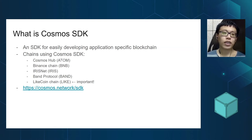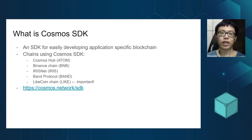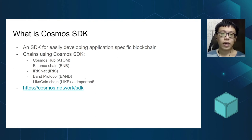Here are some chains that are using Cosmos SDK: the Cosmos Hub, whose token is ATOM, also the Binance Chain which should be quite famous, and also Iris Network and Band Protocol. These are some famous blockchains based on Cosmos SDK. They have similar interfaces and similarities in their code base.